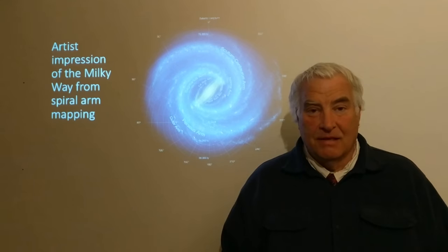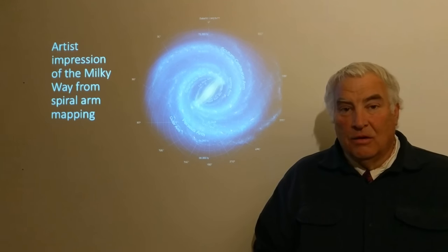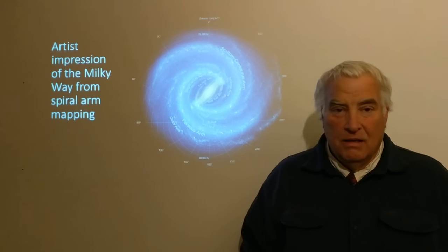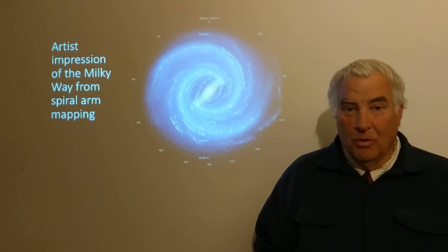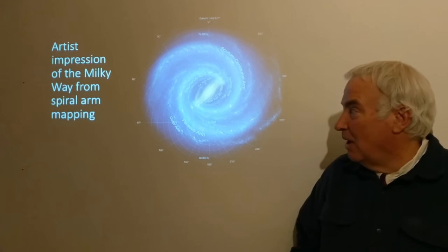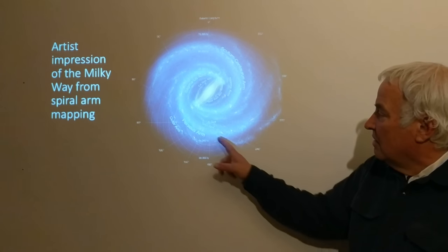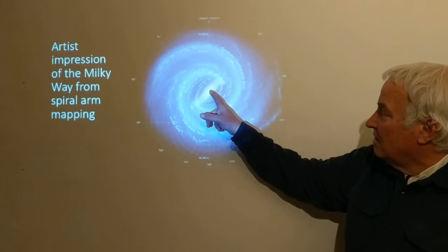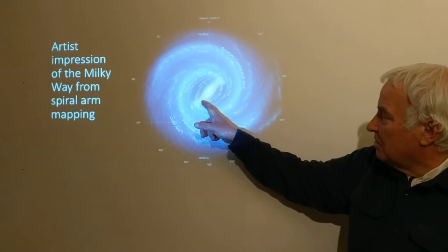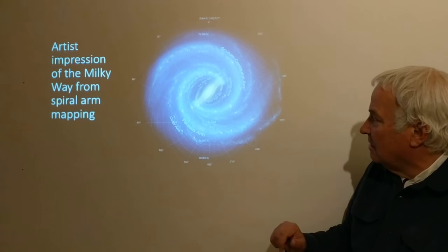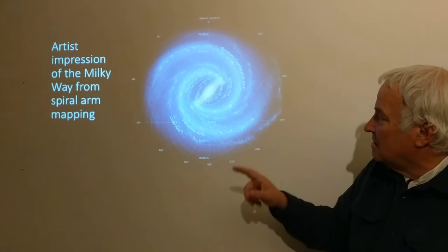I'd like to talk about the local group of galaxies and the local supercluster, or the Virgo supercluster of galaxies. Along the way we'll look at some galaxies in the local neighborhood of our own Milky Way. This is an artist's impression of the Milky Way made by mapping the arms. The Sun is located here, the galactic center is here, and there's a bar of stars across the center — we live in a barred spiral galaxy.